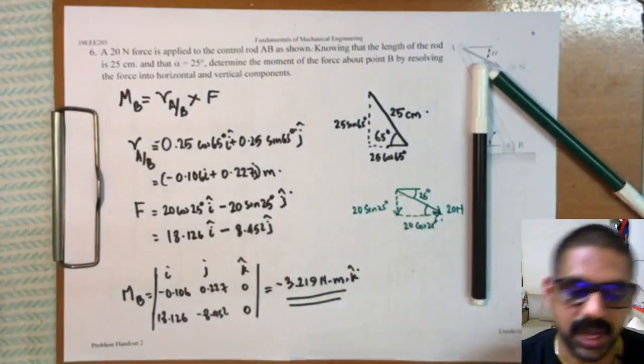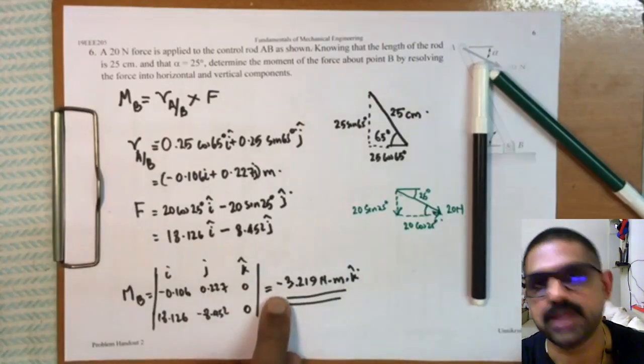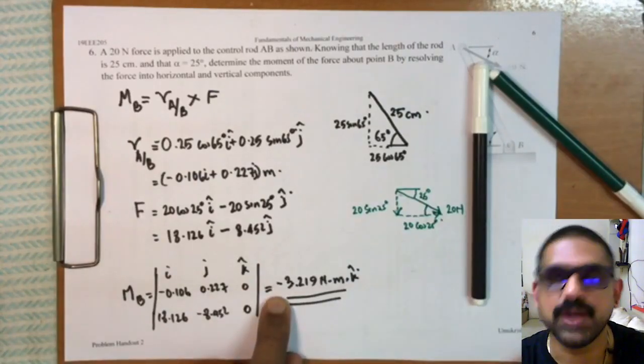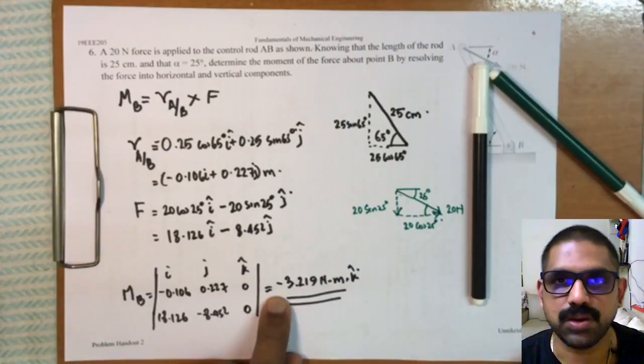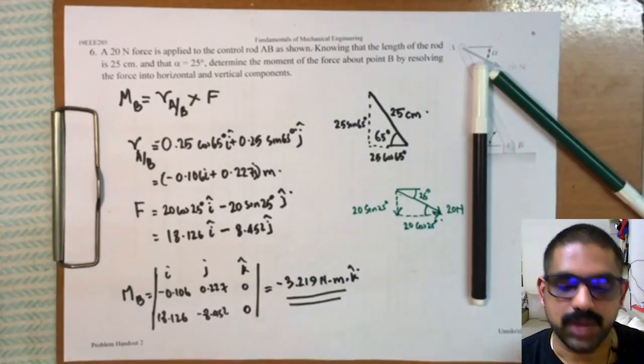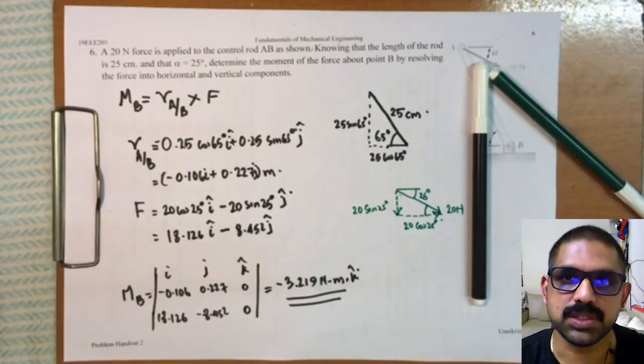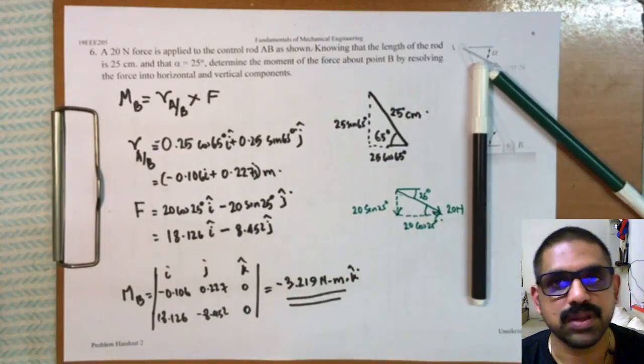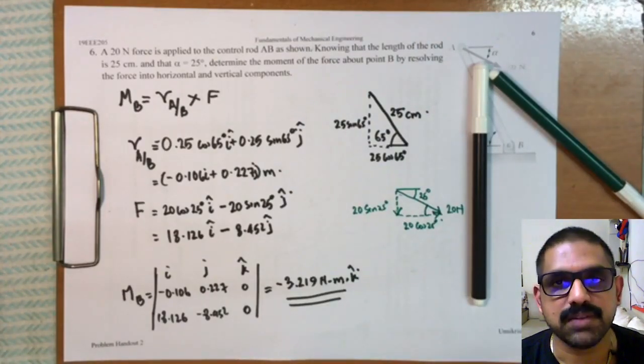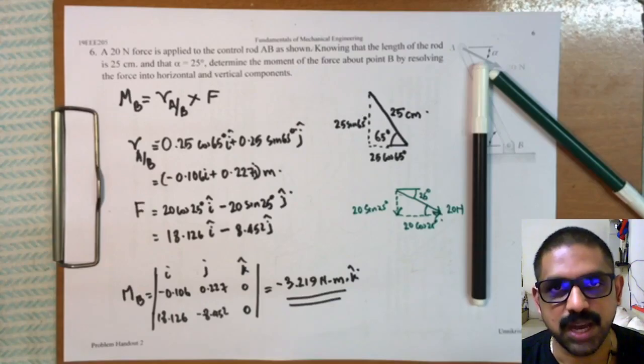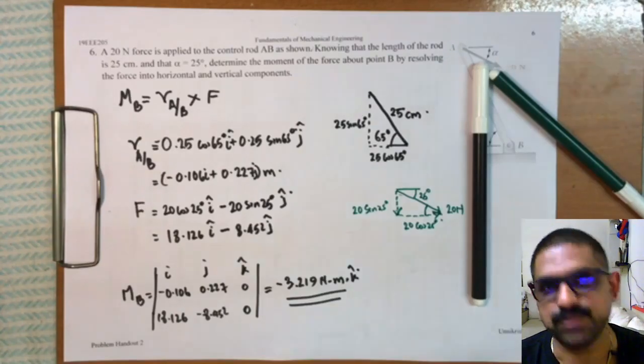This is just one method to find whether the answer that we have got is correct or wrong. So I hope with the help of these two problems you have understood the basic elements of finding cross product of two vectors, and hence find moment of a force about a point. Thank you.